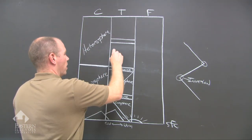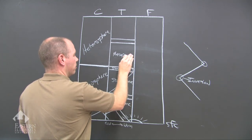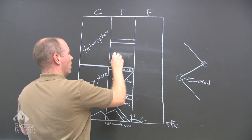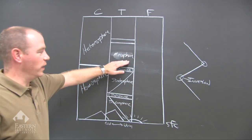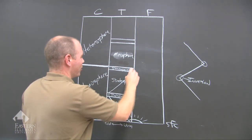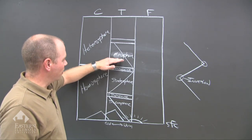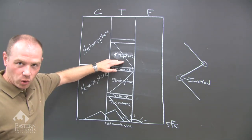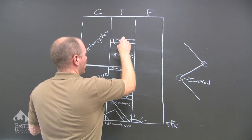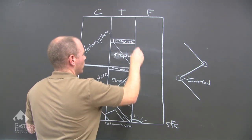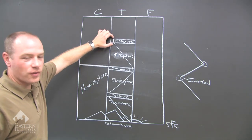Then we get into the mesosphere — a major shell — where the temperature decreases with altitude, similar to the troposphere, but much colder. Then another inversion: the mesopause. So we have the mesosphere, the mesopause, and temperature doesn't change very much at the mesopause.